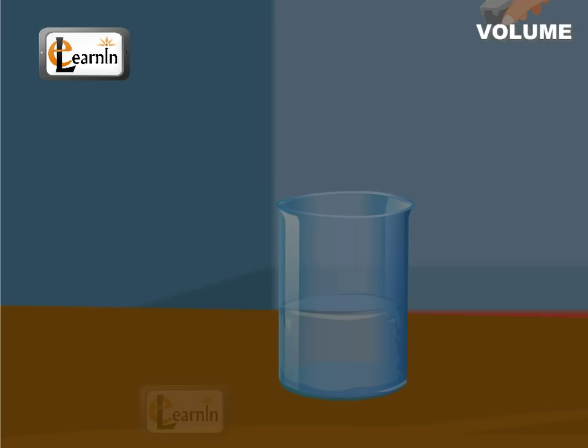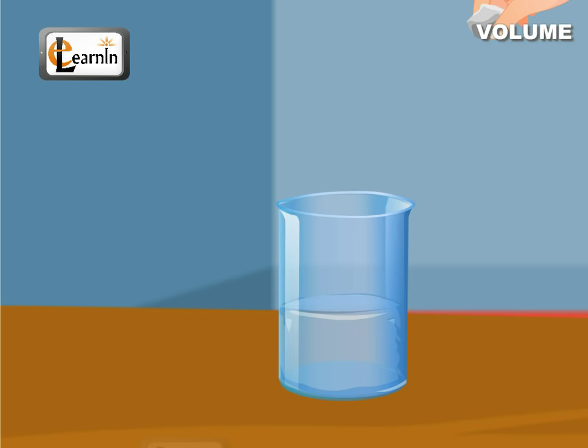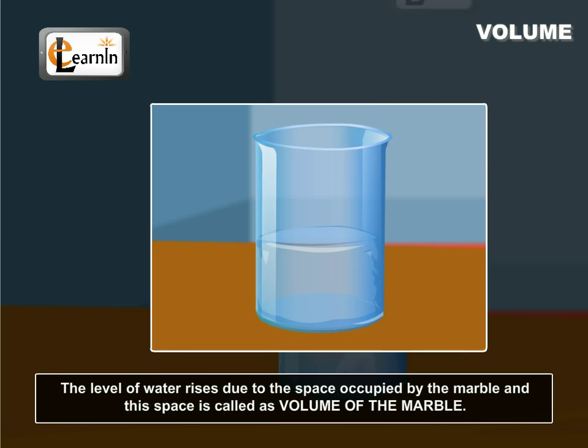Let us fill the measuring jar with water up to a level and then place a marble inside it. The level of water rises a little. This is due to the space occupied by the marble and this space is called the volume of the marble.